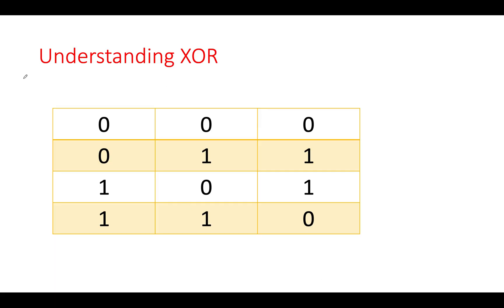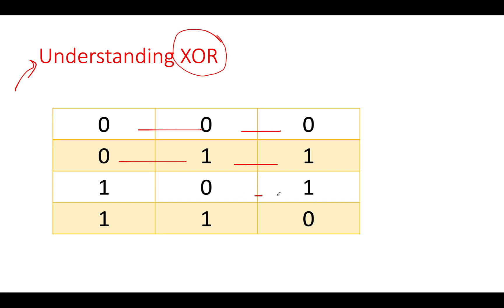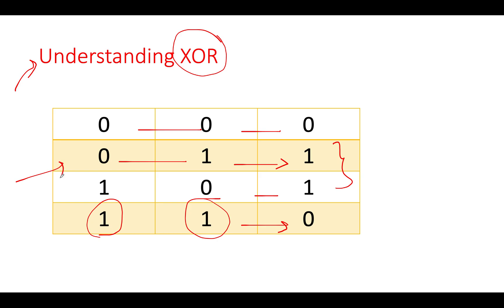Let's start by understanding the XOR operation because that is of utmost importance. If you don't understand XOR, you won't be able to get the solution. XOR of 0 with 0 gives 0; XOR of 0 with 1 gives 1; XOR of 1 with 0 gives 1; XOR of 1 with 1 gives 0. The interesting part: whenever you have opposite values (0 and 1), the answer is 1. When you have the same values (0,0 or 1,1), the answer is 0. If you've understood this, you've understood 50% of the algorithm.